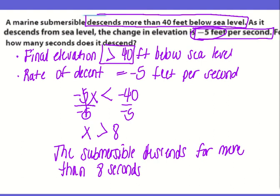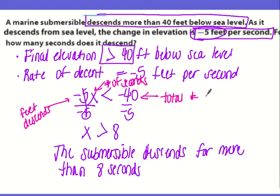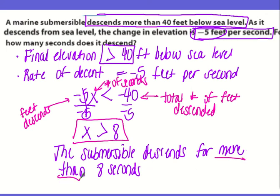So then we can write this as a sentence. The submersible descends for more than 8 seconds. So if we go back here in the labels and stuff, this is feet descending or feet descends. The X is the number of seconds and then this is the total number of feet descended. I think it's a little tricky when we have to write them but in the end we want it to be greater than which is more than 8 seconds.